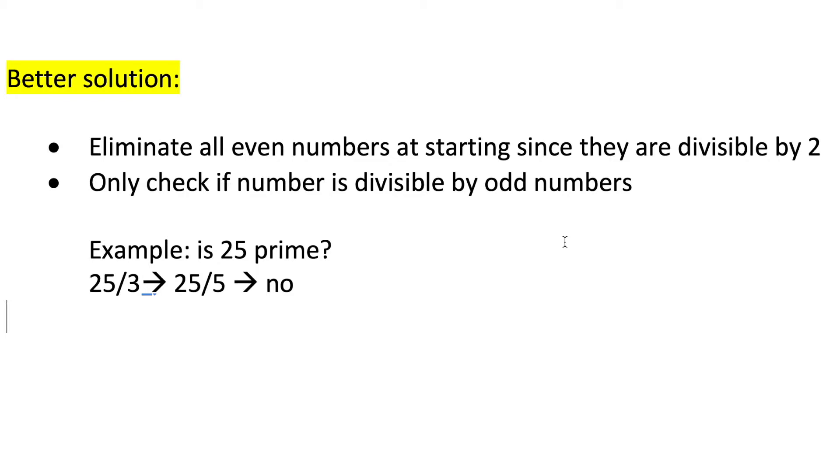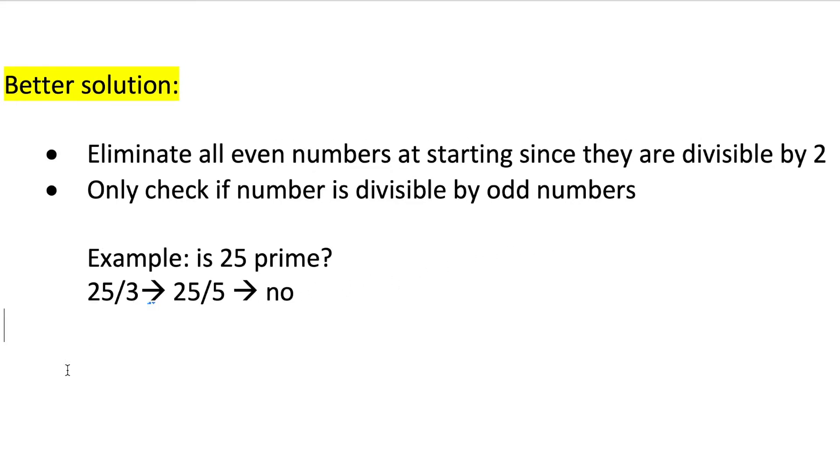By doing this, you would only be checking if a number is divisible by odd numbers. So, for example, if we were checking if 25 is a prime number, we would only have to check if it is divisible by 3 and then 5 before getting our answer as compared to our previous solution where we were checking if it is divisible by 2, 3, 4, and 5.